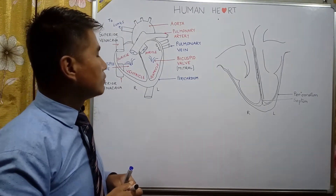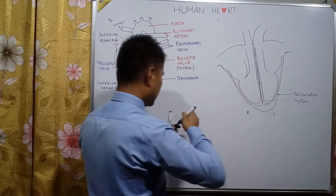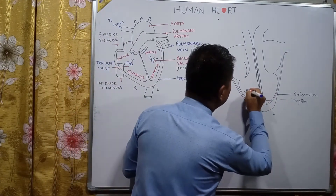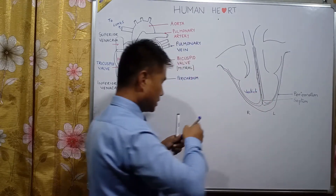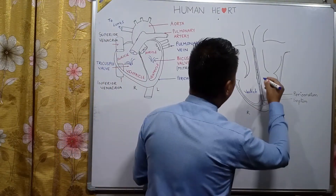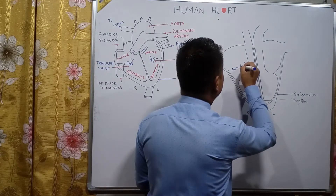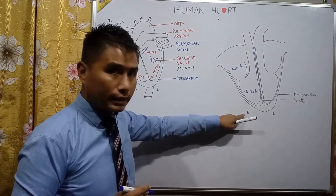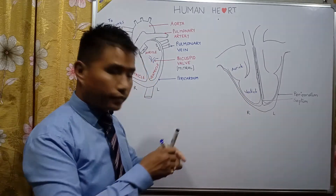These are the ventricles — let us write ventricles with blue. And this is the auricle. So this is the auricle and this is the ventricle. Since they are on the right-hand side, this is known as the right auricle and right ventricle.